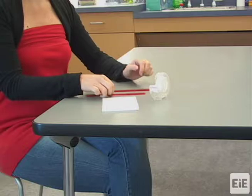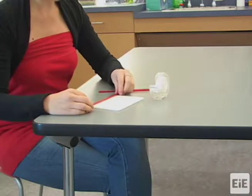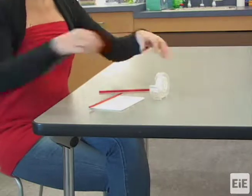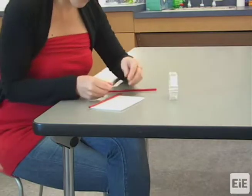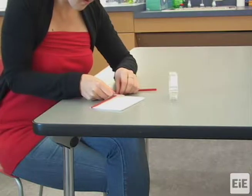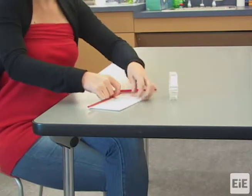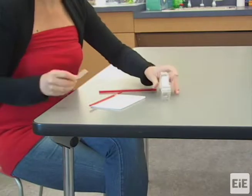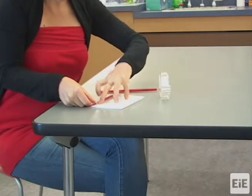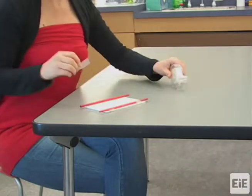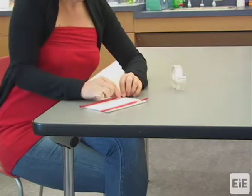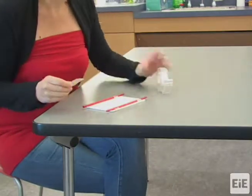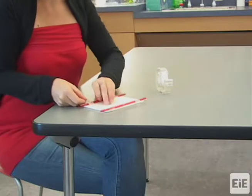Next, attach two drinking straws to the bottom of the foam using cellophane tape. Place the straws along the longer edges of the raft, 4 inches apart. The two straws should be straight and parallel; this helps the finished raft to glide smoothly along the completed track.